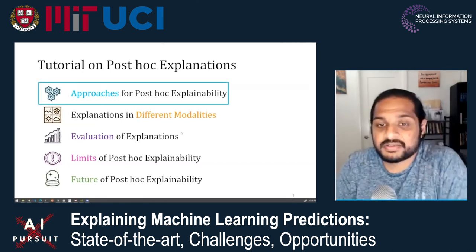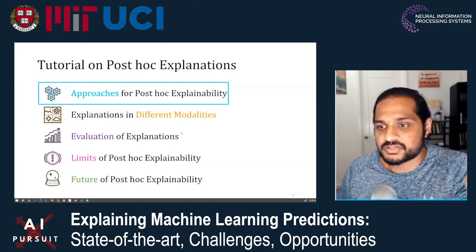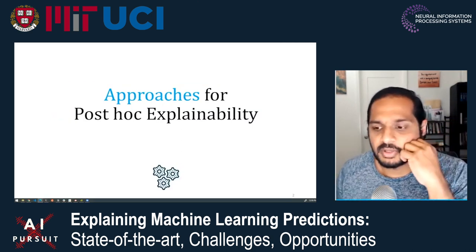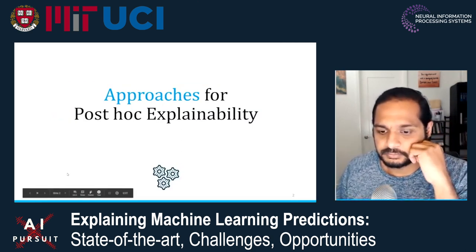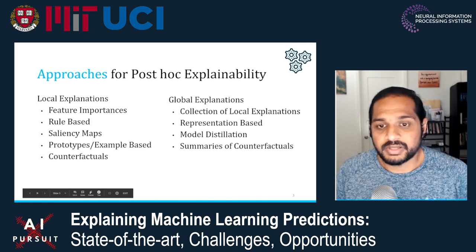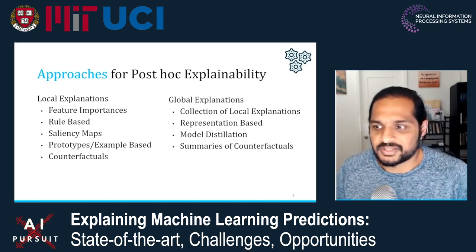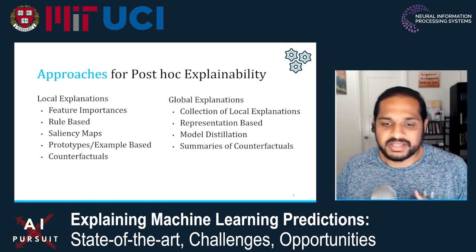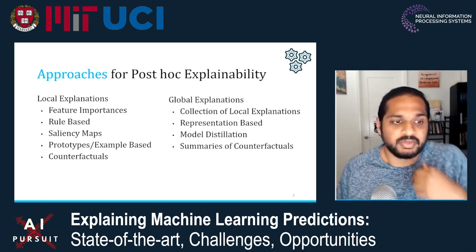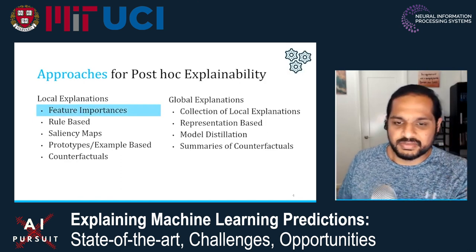Welcome to the first section of this tutorial, where we're going to talk about approaches for post-hoc explainability. This is to get you familiar with the techniques commonly used in this literature. We'll cover local explanations — feature importances, rule-based, saliency maps, prototypes, and counterfactuals — and then talk about global explanations. The techniques in this section are all model-agnostic, or black-box techniques. The idea is that you have the machine learning model or classifier, but you don't have any access to its internal structure — you give a data point, call the method, and get some decision out.